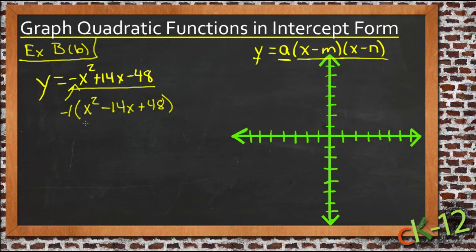So we know we have x times x, that equals x squared, and we need two numbers that multiply to be 48, and then are going to add to be negative 14.